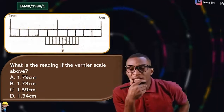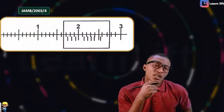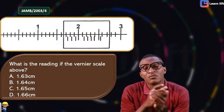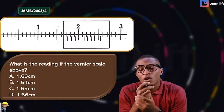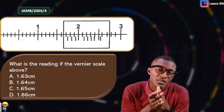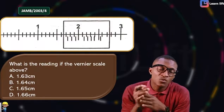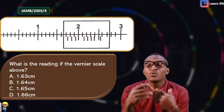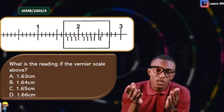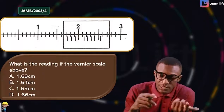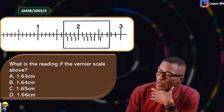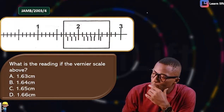Let's take another question — JAM 2003 Question 4. Try to read this one yourself first, then when I solve it you can cross-check your answer. Post your attempt. First, I'll get the main scale reading.